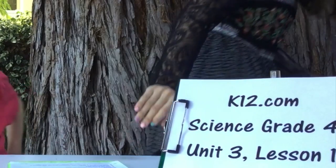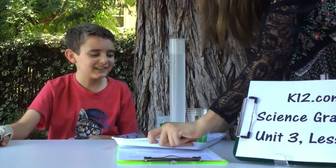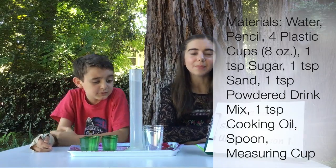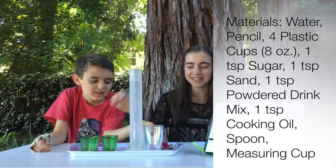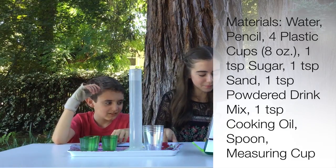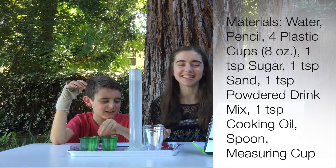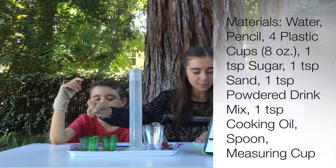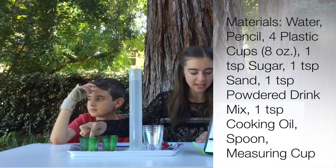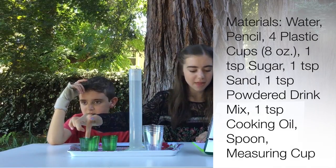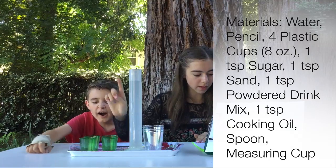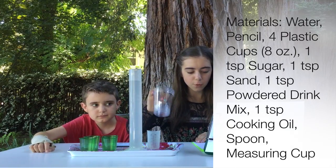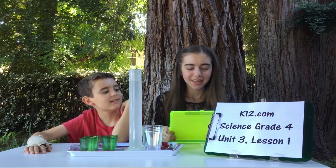For today's lab we have everything that we need right here. This lab is called 'What's the Solution?' You will need some water — a lot of water — some pencils, and a spoon or anything to stir with. In four little cups we have five milliliters of sand, which is one teaspoon, five milliliters of powdered drink mix, sugar, and cooking oil. We also have a measuring cup and four plastic cups that hold eight ounces of liquid.